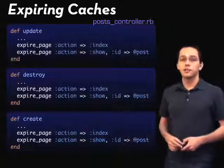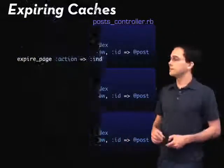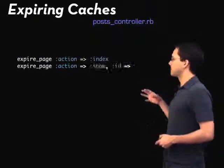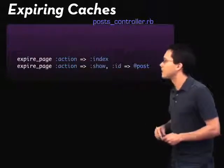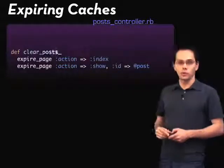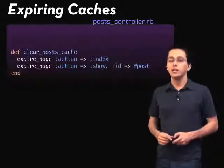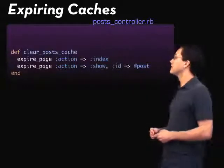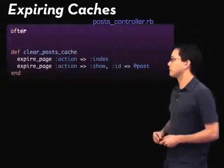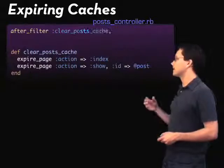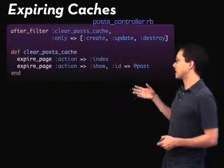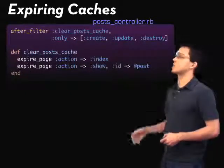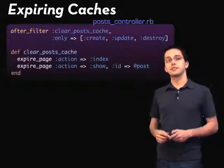One way we could DRY this code up is by taking these methods and putting them into a single function we're going to call clearPostCache. We would then need to declare an after filter so that this method gets called after the create, update, and destroy actions.